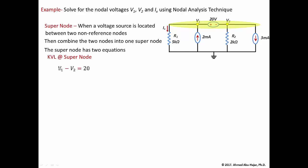So V1 minus V2 equals 20 volts is the first equation of the super node. The second equation uses KCL at the super node — summing all currents leaving the super node equal to zero. Pay attention: the current leaving through the resistor on the V1 side is V1 over R1, and the current leaving through the resistor on the V2 side is V2 over R2.